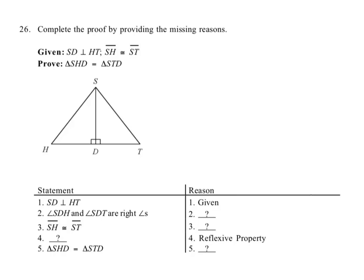Okay, we're going to complete this proof by providing the missing reasons. They tell us that side SD is perpendicular to side HT. I'm just going to highlight that: SD is perpendicular to HT. We also know that SH is congruent to ST. This is congruent to this. Then they start to talk about the angles.